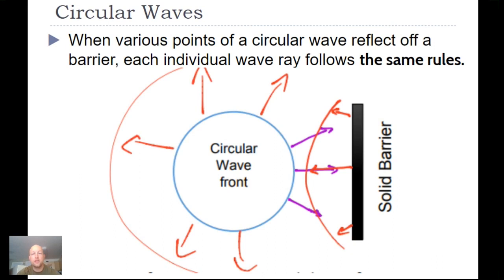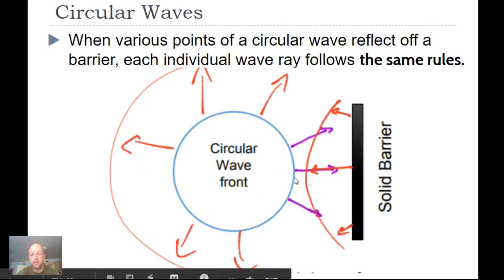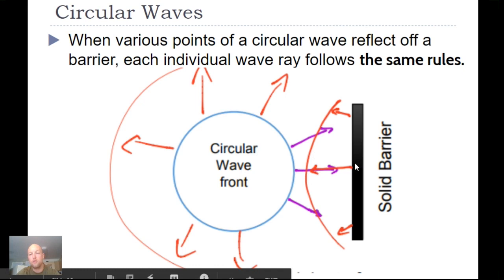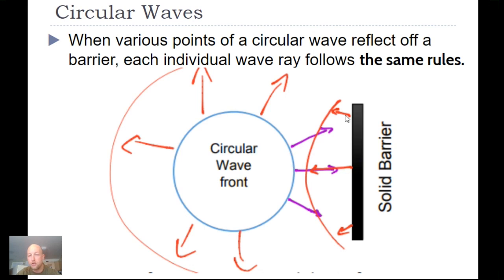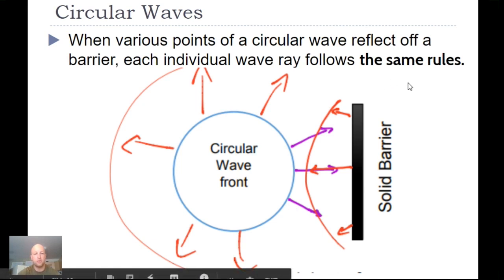When various points of a circular wave reflect off a barrier, each individual wave ray follows the exact same rules. At any given point around the circular wavefront, there is a perpendicular wave ray. If a ray is already perpendicular to the solid barrier, it reflects exactly back. If it hits at an angle, it reflects off at an equal angle to the normal — equivalent to the angle of incidence.